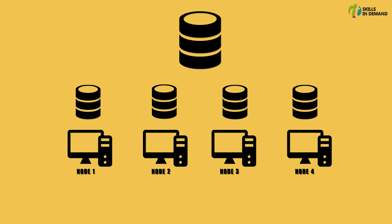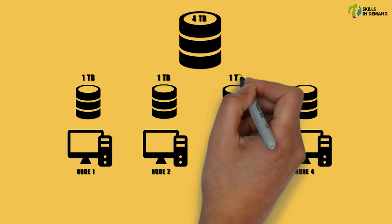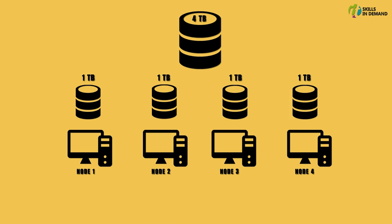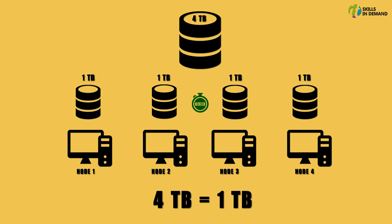Let us say we have around 4 terabytes of data and a 4-node Hadoop cluster. The HDFS would divide this data into four parts of 1 terabyte each. By doing this, the time taken to store this data onto the disk is significantly reduced. The total time taken to store this entire data is equal to storing one part, as it will store all parts simultaneously on different machines.